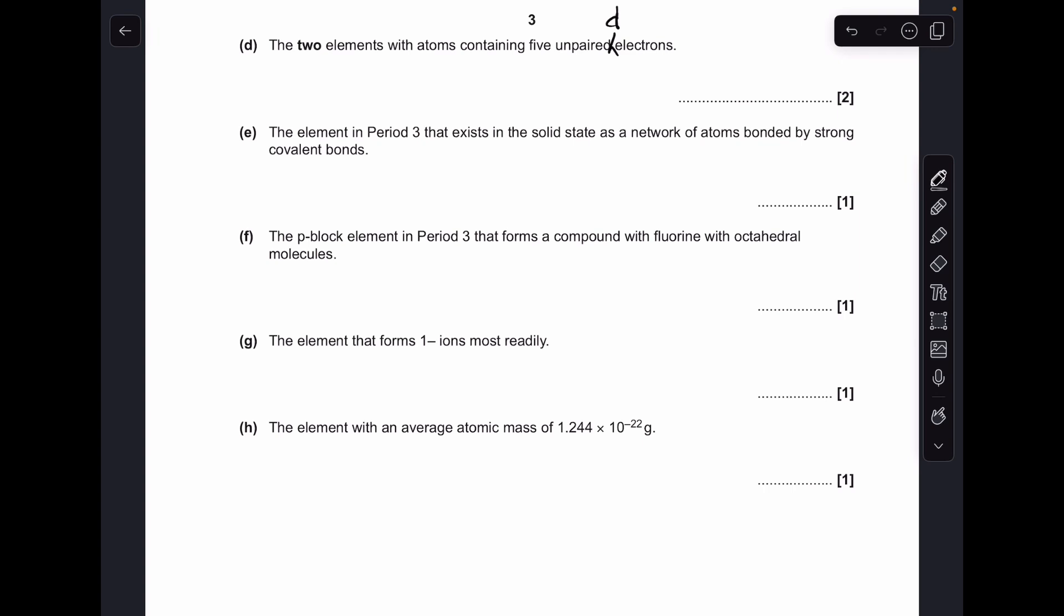Moving on to part D, so the one with the typo on. The two elements with five unpaired D electrons are manganese and chromium. There's just a reminder of their electronic structures: manganese, argon 3D5 4S2, and chromium, argon 3D5 4S1.